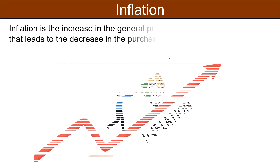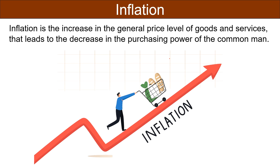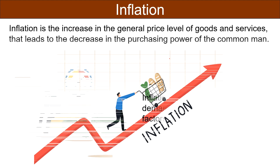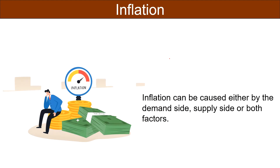To understand the two types of inflation, first we should have an understanding of the term inflation. Inflation is the increase in the general price level of goods and services that leads to the decrease in the purchasing power of the common man. It is often measured through the Consumer Price Index. Further, inflation can be caused either by demand side, supply side, or both the factors.